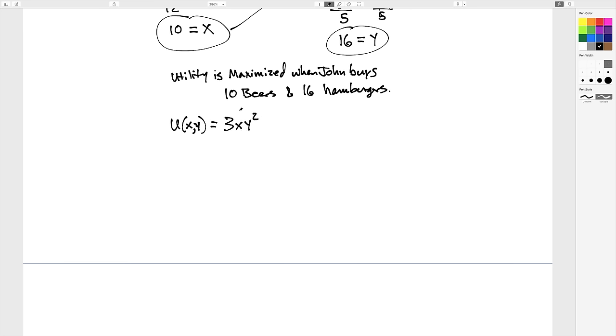Utility of 10 and 16 equals 3 times 10 for X, 16 for Y squared, which equals 7,680 utility units, which are arbitrary, but allows for comparison.